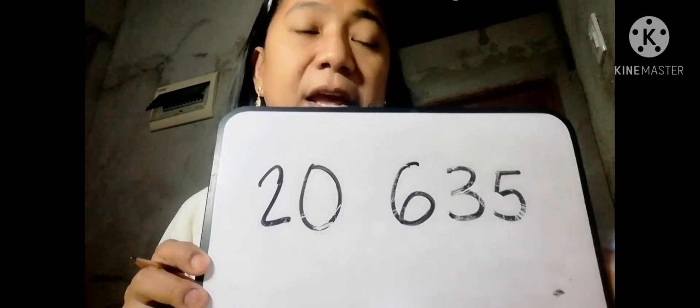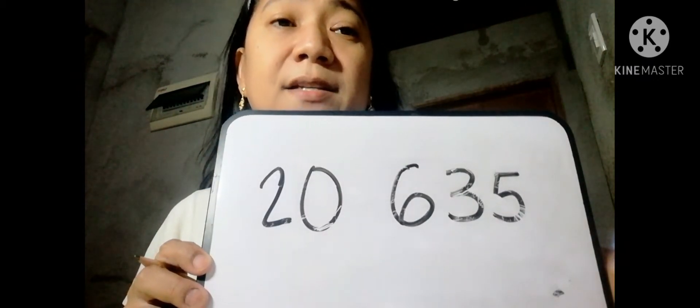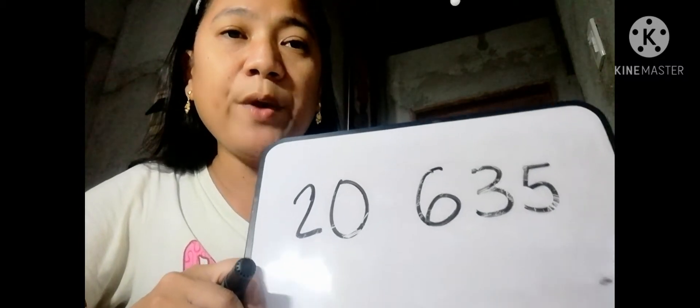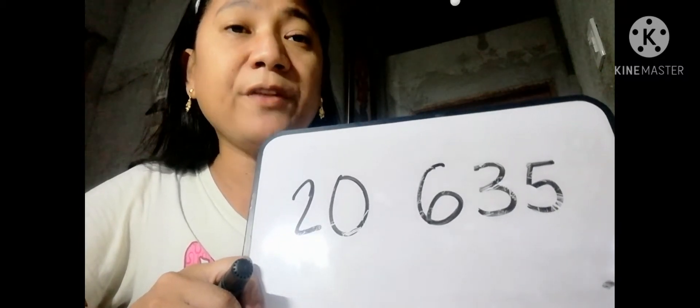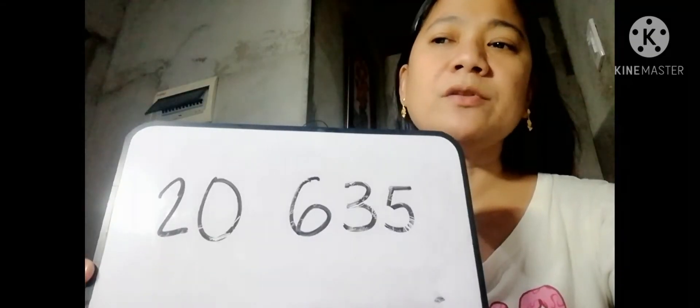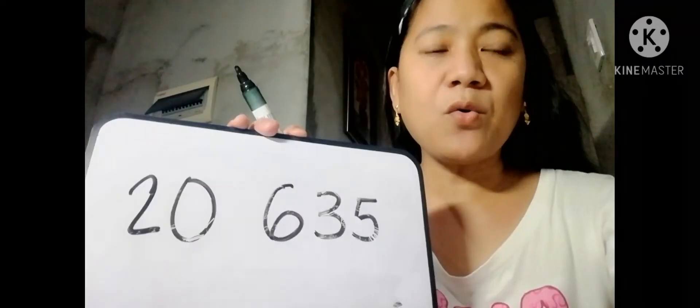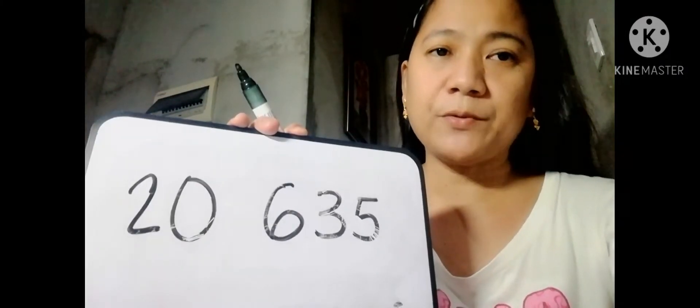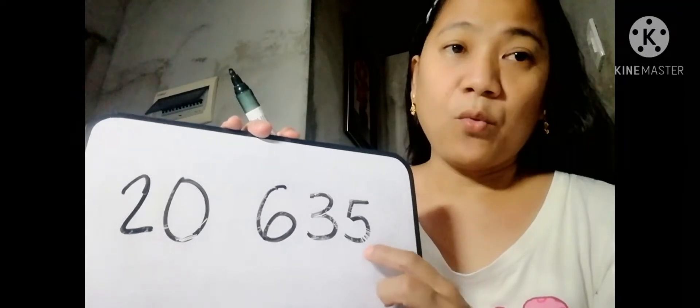So let us try to visualize this number. In visualizing a number, we have steps that we should consider. For step 1, we should determine the place value of each digit. So what are these place values? We have ones, tens, hundreds, thousands, and we have the 10,000.